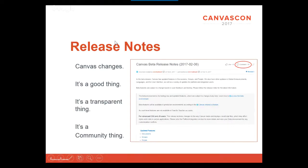The release notes: if you are still kind of new to Canvas or you're considering it, you may not know that Canvas does a release every three weeks. And that's actually a good thing. It seems scary at first, especially if you're migrating from a system that has updates once or twice a year, but it's great because bug fixes get pushed through and new features don't have to wait a year. The beta release notes come out first, and then the production release notes come out. Everybody has a beta environment, so you can test all these features before they make it into the live environment for your users.